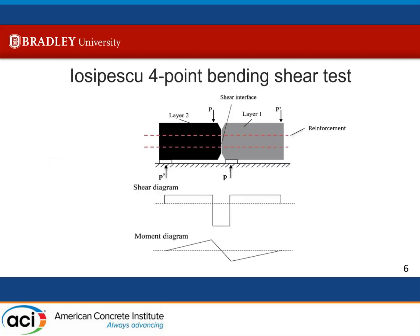The test I used was the ISOPESCO four-point bending shear test. It consisted of two halves of the concrete member represented by layer one and layer two in this diagram, with four applied loads. The load P is much greater than P-prime, and the reinforcement runs along the member, represented by the red lines. The most important thing about this test is it depicts the shear at the interface very well, where we have maximum shear at the interface point, which also happens to be where there is no moment. This is very useful to test the interface shear transfer capacity of the member.